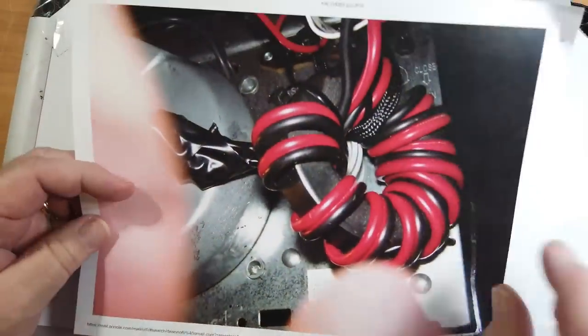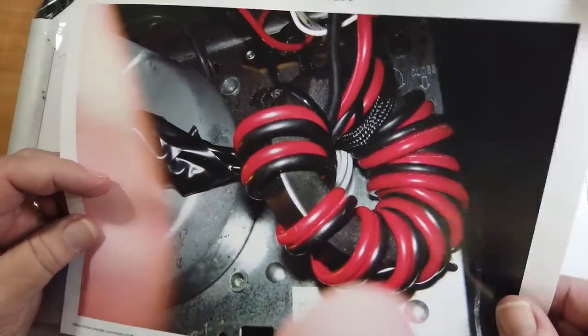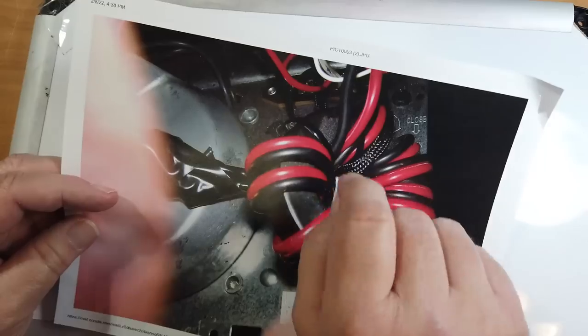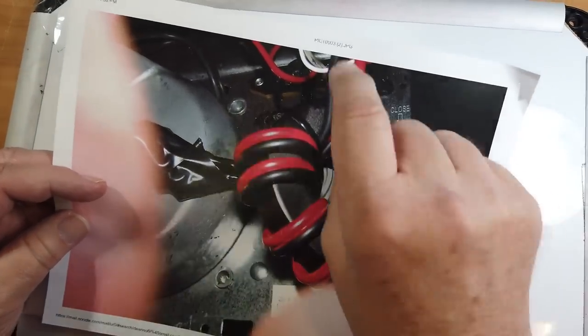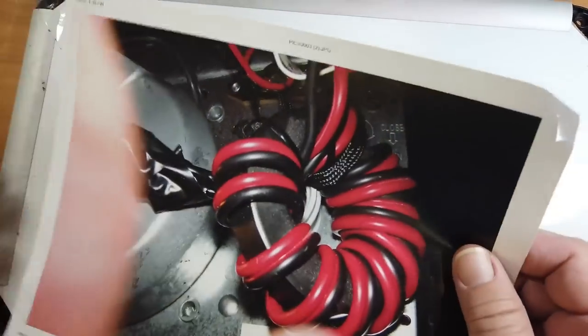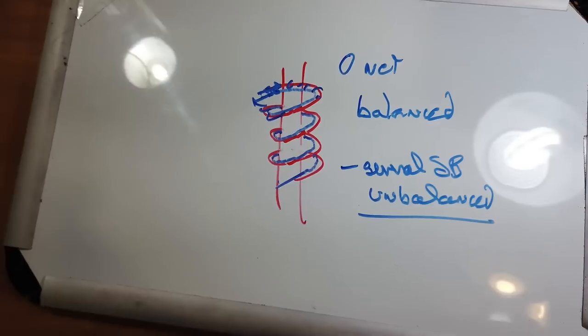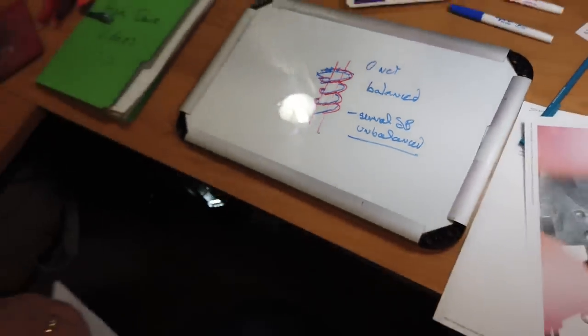So what we see him doing here is winding these around. Now, he could have gotten some ferrite beads and put a bunch of beads around here, too. That would have worked also. Now, this brings up the general idea of toroids.